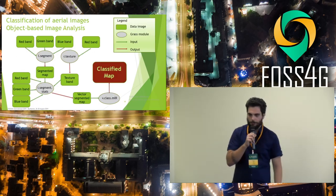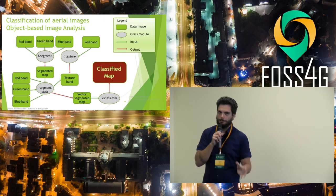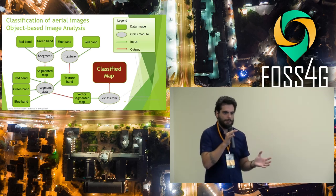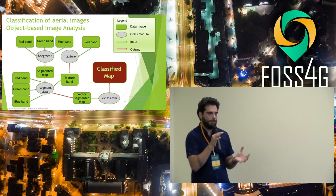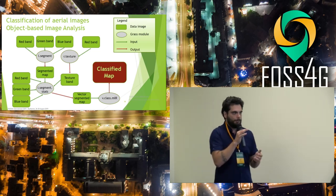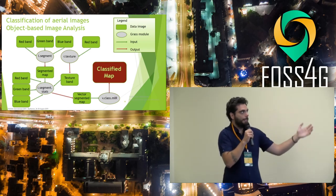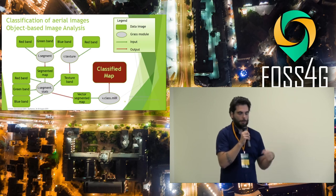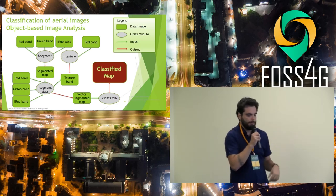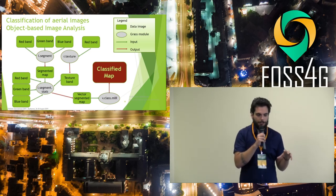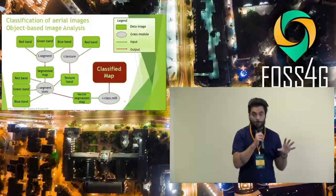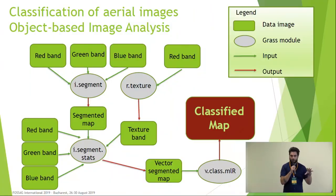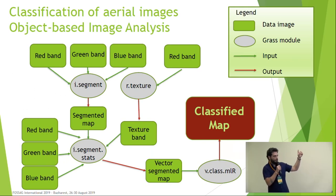After all the dataset is orthorectified — meaning we can now use them in a reference system — it is the turn to perform the land use land cover classification. This was performed by using an object-based image analysis approach, because the resolution of our images is such that each object is represented by a set of pixels. Here we have a quick overview of the steps that we were able to automate using Python.